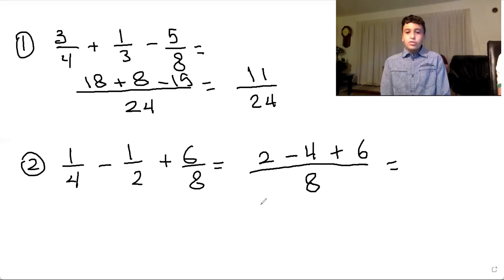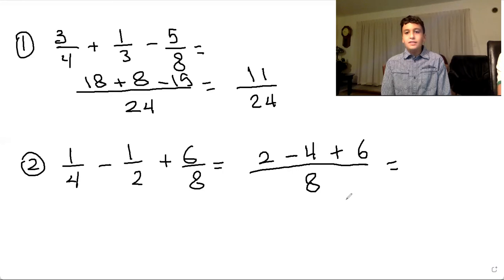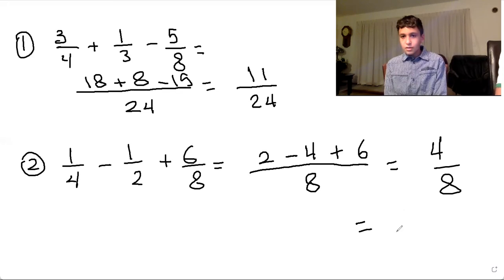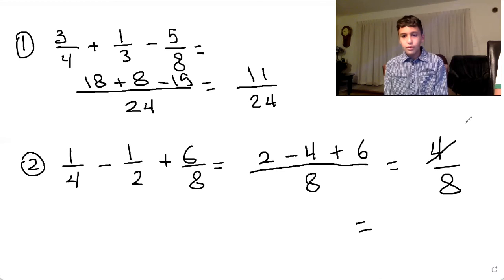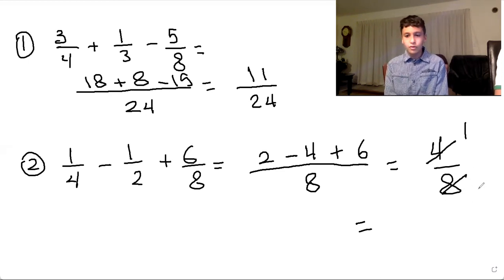Now we do 2 minus 4, which gives you negative 2, and then we add 6, which gives you 4. Now we can reduce by 4. So 4 divided by 4 gives you 1, and 8 divided by 4 gives you 2. Our final answer will be 1 over 2.